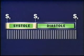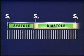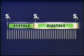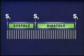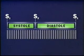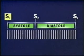Ventricular systole occurs between S1 and S2. Ventricular diastole occurs between S2 and the next S1. Because diastole usually lasts longer than systole, you can identify the two sounds: one two, one two, one two.